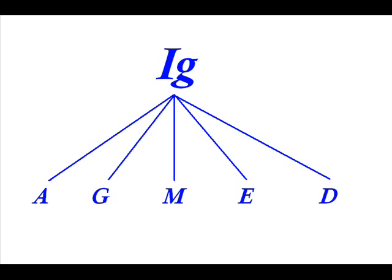The main ones — the formula is AGMED. There is immunoglobulin A, immunoglobulin G, immunoglobulin M, E, and D.